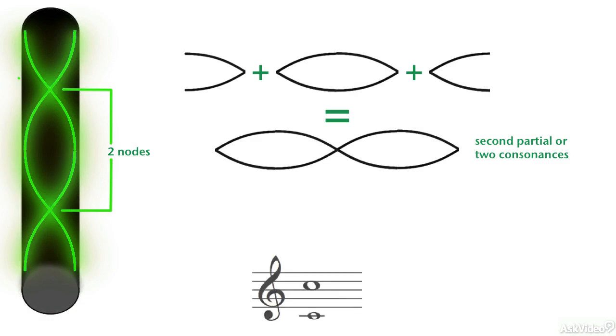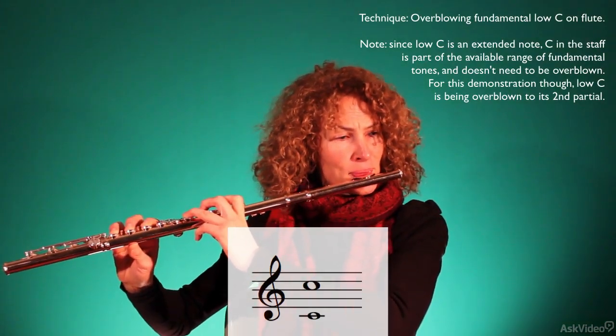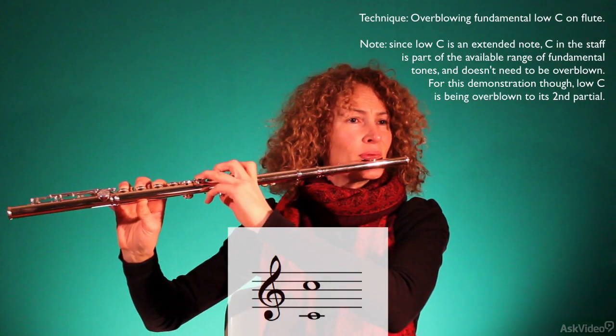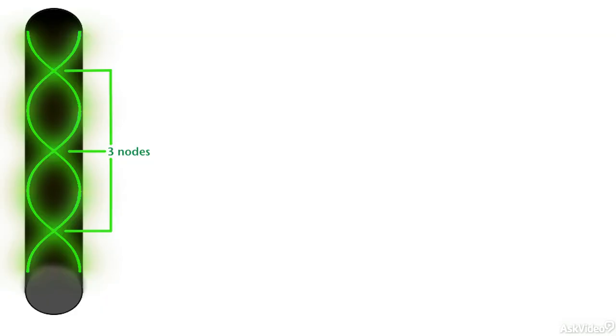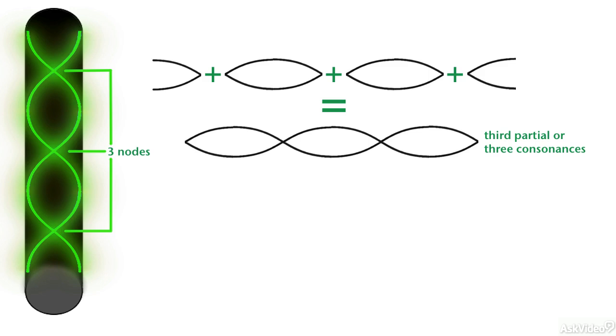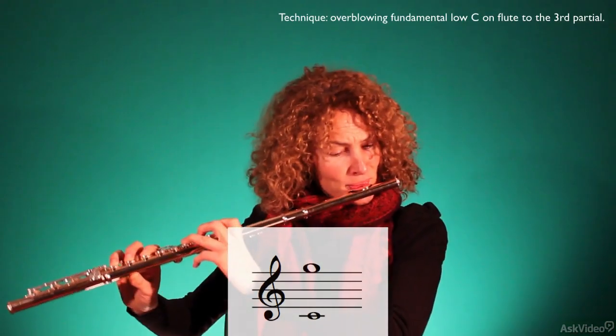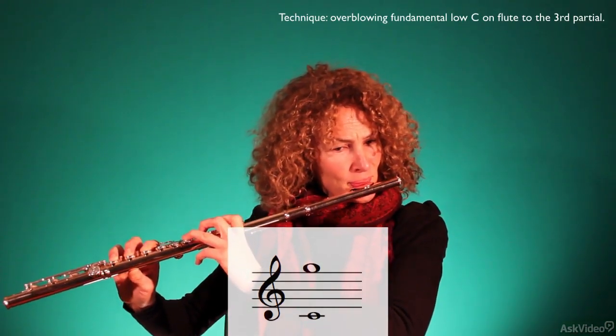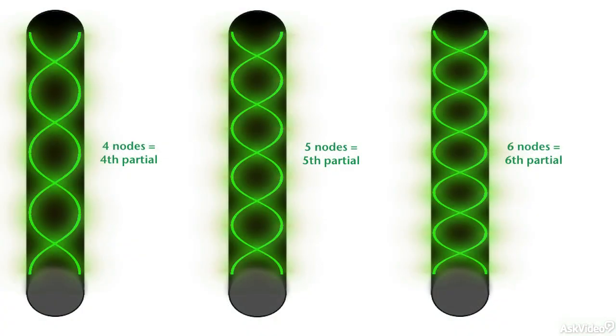When the pipe is overblown with minimum strength, two nodes form within the pipe. The pitch will jump up an octave to the second partial. The third partial is reached by the next degree of overblowing, forming three nodes within the open pipe. This produces a tone that's an octave and a fifth above the fundamental. The sequence continues from there and is potentially infinite, but players rarely go higher than the sixth or seventh partial.